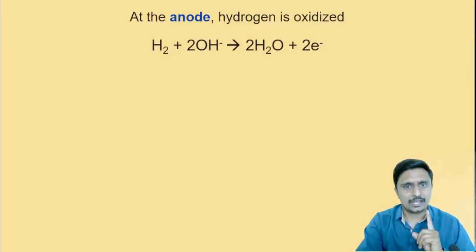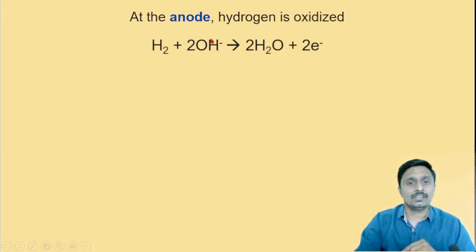What happens at anode? Hydrogen gas is going to oxidize. The reaction is given here like this: Hydrogen gas plus twice OH- ions. And with these OH- ions from the potassium hydroxide solution, there is an oxidation reaction. At anode, oxidation takes place. Hydrogen is oxidized.